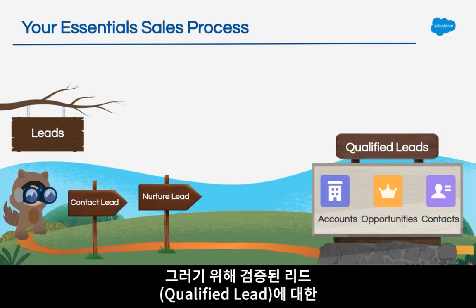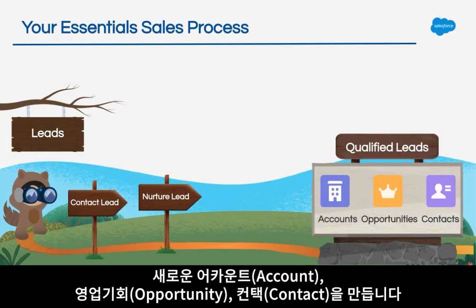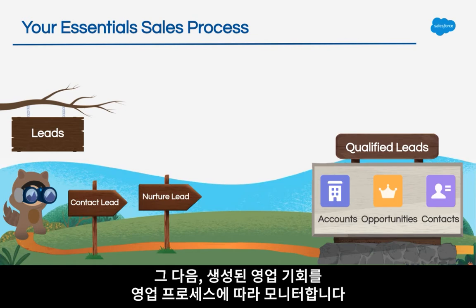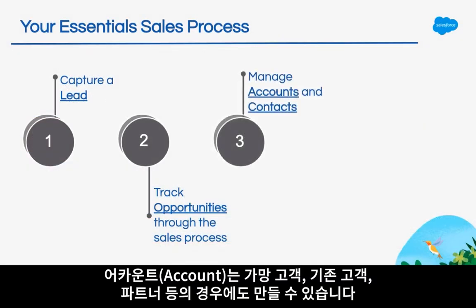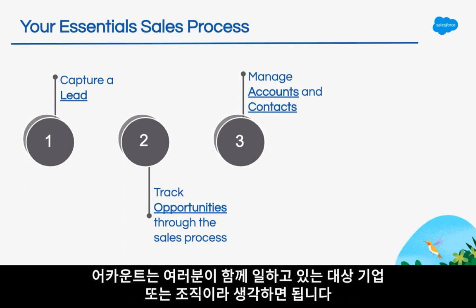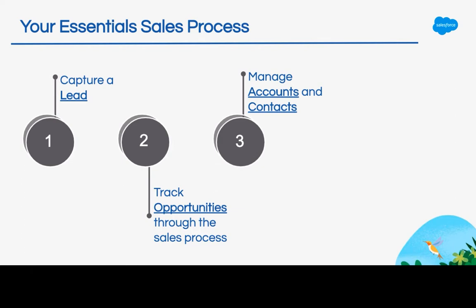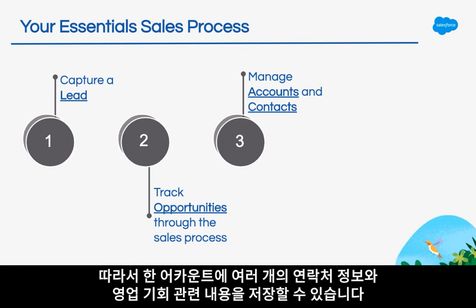Now they need to be tracked and managed in the opportunities object. To do so, we need to take your lead and create a new account, contact, and opportunity from your lead information. Once this is created, we then track these opportunities through the sales process. Additionally, accounts are also considered prospects, customers, partners, and more. Think of an account as the company or organization that you're working with. They can have one or more contacts or opportunities associated with them.